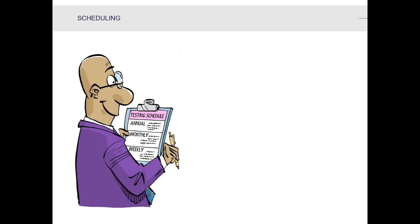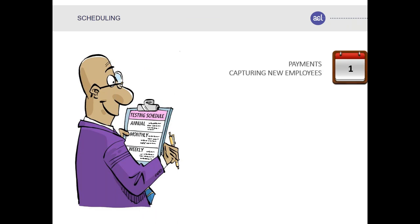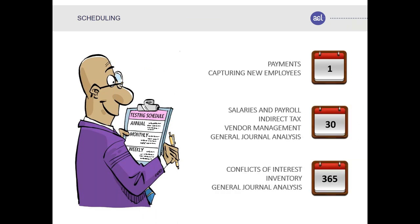The next step is deciding how often you want access to the data and how often to schedule analytics and testing. Some things might be done daily, such as reviewing payments. Salaries and payroll might be done monthly. Higher-level items such as journals or conflict of interest reviews might be done annually. The audit function decides when to get the data, fitting in with IT protocols, and decides how often to run those analytics.